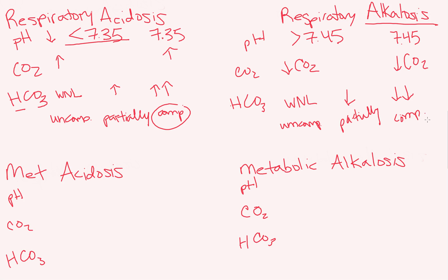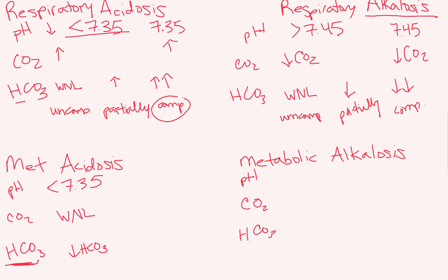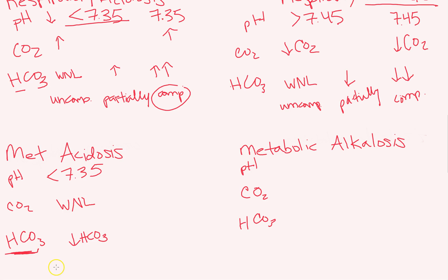Metabolic acidosis means low pH less than 7.35, and our kidneys are the cause — bicarb is causing it. Bicarb is basic, so decreasing bicarb gives us an acidic pH. Something in our system — kidney problems, DKA — is decreasing our bicarb. Your CO2 is within normal limits because you haven't compensated; your lungs aren't even aware anything is going on yet. So you have uncompensated metabolic acidosis.